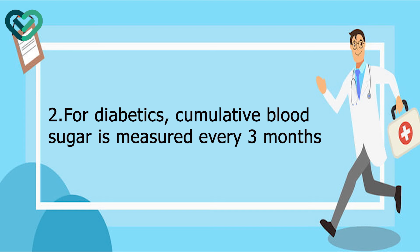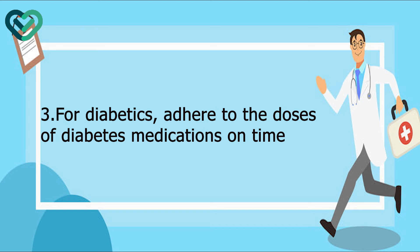For diabetics, cumulative blood sugar is measured every three months. Additionally, adhere to the doses of diabetes medications on time.